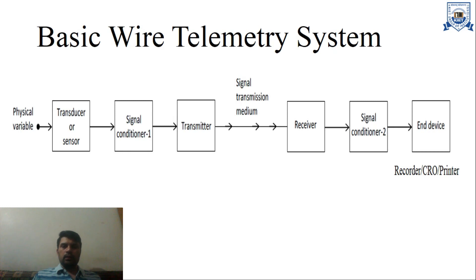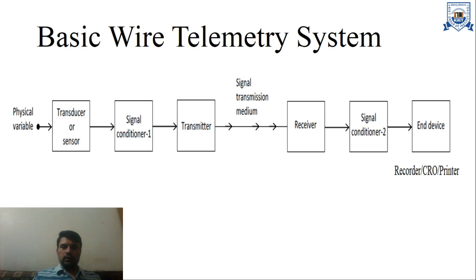The next step is the receiver. At the receiver end, we have a receiving antenna, then signal conditioner 2. In this signal conditioner, we have amplifiers, filters, demodulators, demultiplexer, etc. Next we have the end device, where we use recorders, CROs, digital storage oscilloscopes, printers, etc. This is our basic wire telemetry system, in which the transmission medium is through wires only.